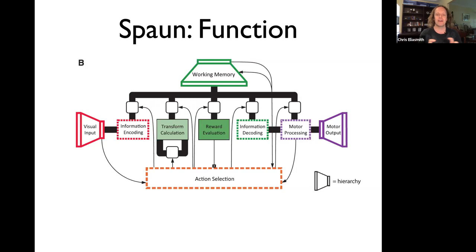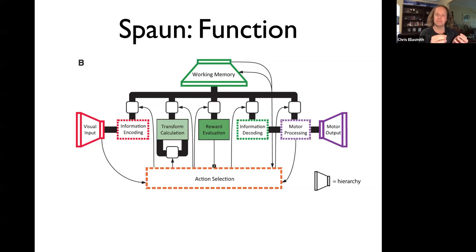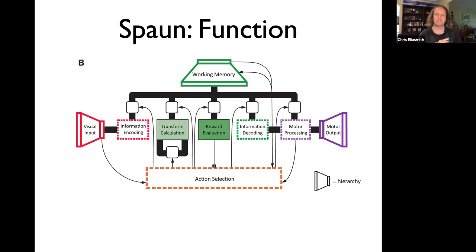At the bottom, action selection takes information from all components but also projects information back to the communication channels between them. This allows routing of information — from the vision input area to working memory, or from working memory to motor output. You can set up this routing in different ways with the basal ganglia to perform different kinds of tasks.